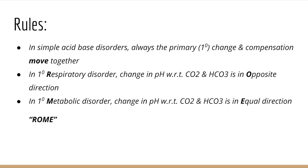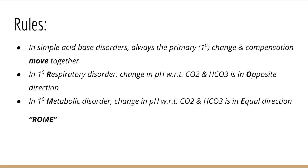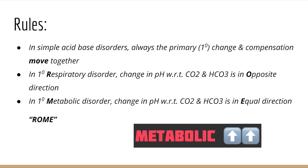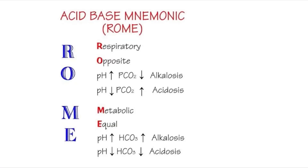By the first rule, CO2 and bicarbonate move together with the primary change. Whether it is respiratory or metabolic is decided by the relation to pH, and this can be remembered with the mnemonic ROME. For respiratory disorders, CO2 and bicarbonate go in the opposite direction to pH — hence R and O. For metabolic disorders, they go in the same direction — hence M and E.